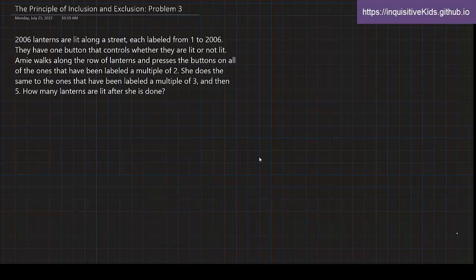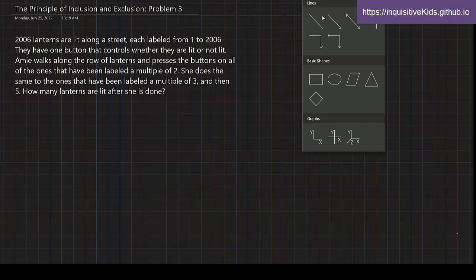First, we know that the lanterns can either be lit or not lit. How many times do you have to press the button if you want to be lit? You have to be touched an even number of times, which is either you've never been touched, like you're a prime number or something like that, and she never clicked you. Or you have been clicked twice, which means that you were a multiple of two of the numbers that are talked about.